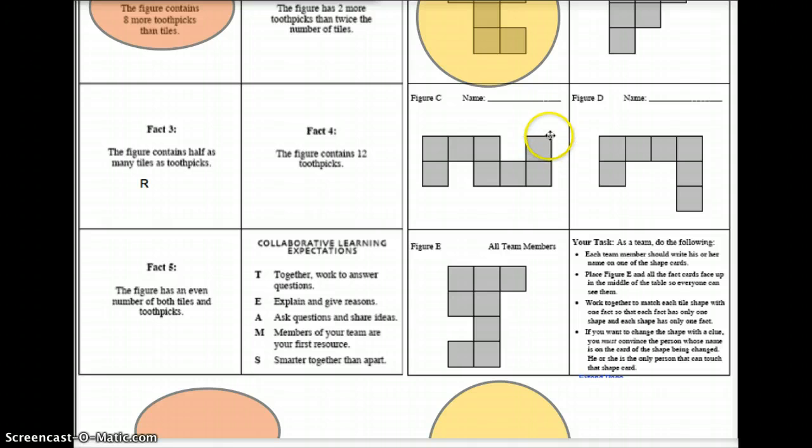We'll move on to this one. I'm going to start, let's see, let's start on the very top so I don't get lost where I'm going. 1, 2, 3, 4, 5, 6, 7, 8, 9, 10, 11, 12, 13, 14, 15, 16, 17, 18. So I've got 18 toothpicks here. And I've got 1, 2, 3, 4, 5, 6, 7, 8. 8 tiles. 18 toothpicks minus 8 tiles. That's a difference of 10. I'm looking for 8, so this one doesn't work.